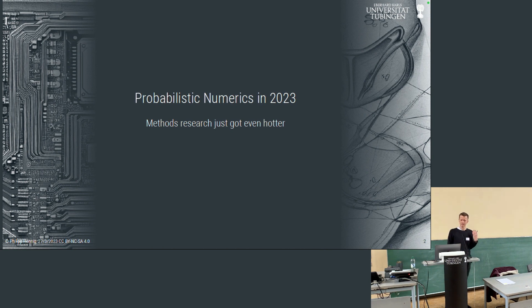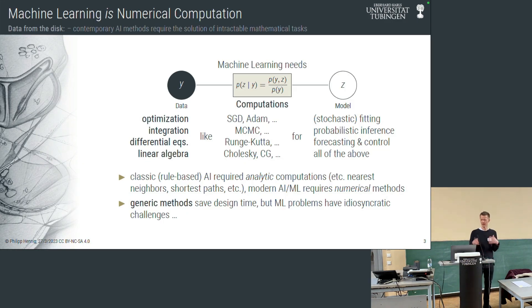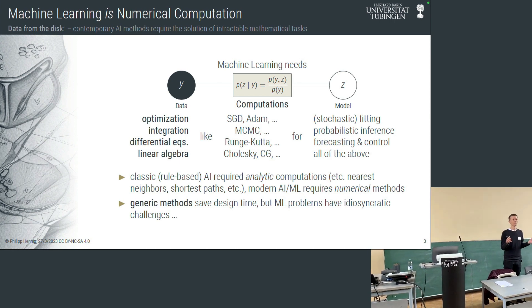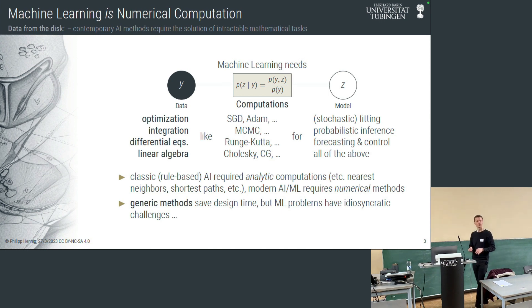Probabilistic numerics is about describing computation in the language of machine learning and AI. A machine learning algorithm, if you ask the media, is a computer program that adapts a model to data. But actually both of these words — model and data — are in some sense external to the machine that does the learning. The data comes from the outside world, and the model is provided by a human who writes it down and describes it in code.